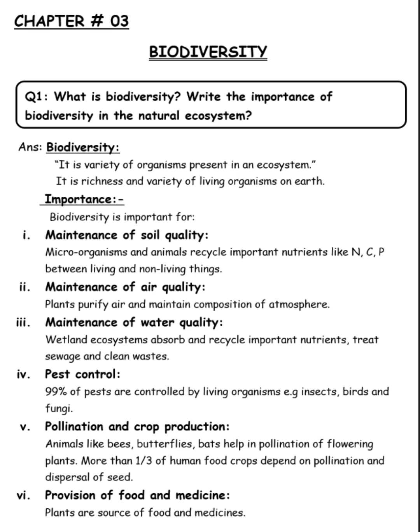Pest control. 99% of pests are controlled by living organisms. For example, insects, birds, and fungi. Pests are controlled by living organisms such as insects, birds, and fungi.